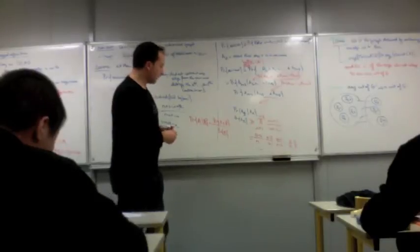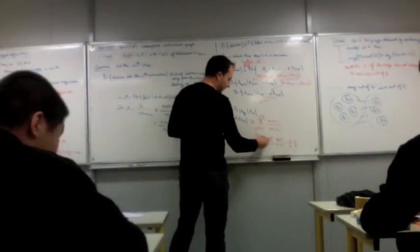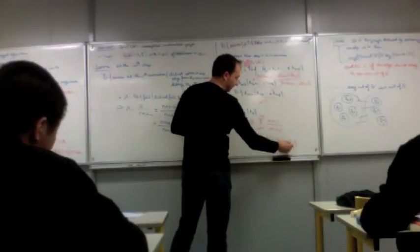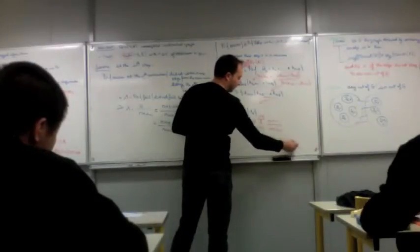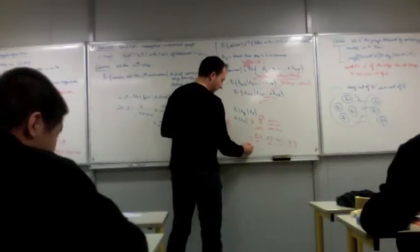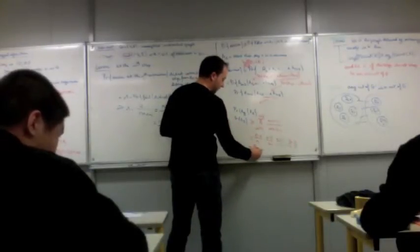So what do you have? You have this term cancels out with this one, this term cancels out with this one, this one with this one, the 4 cancels out with that, the 3 cancels out with this 3, and what remains here is simply 2 over n times n minus 1.